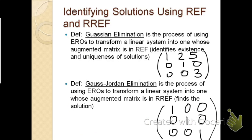Now we define two types of elimination. Gaussian elimination is the process of using EROs to transform a linear system into one whose augmented matrix is in REF — it has the stair-step pattern with zeros below leading entries, but leading entries need not be one. Gauss-Jordan elimination transforms the system into one whose augmented matrix is in RREF — it still has the stair-step pattern, but also has zeros above leading entries and all leading entries are ones.